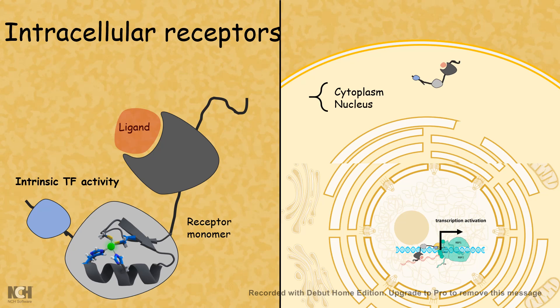Just like in growth signaling pathways and receptor tyrosine kinase, where the receptor has intrinsic tyrosine kinase enzymatic activity, in this case the receptor has an intrinsic transcription factor activity which may lead to transcription activation, and it can bind to the DNA. So the receptor itself can bind to the DNA in a ligand-dependent manner.